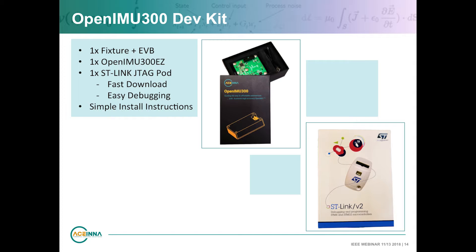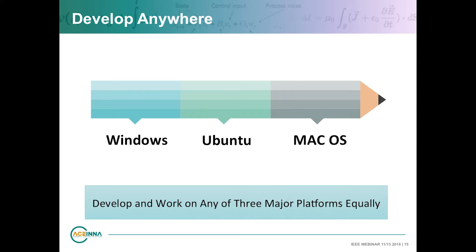All the software is available for free and open source. From a hardware point of view, you do need a developer kit to download code into an IMU. We have the OpenIMU 300 developer kit, which consists of the IMU, an eval board, and an ST-Link JTAG pod for fast download and easy debugging. The OpenIMU development platform is platform agnostic — you can develop on Windows, Ubuntu, and Mac OS equally well.